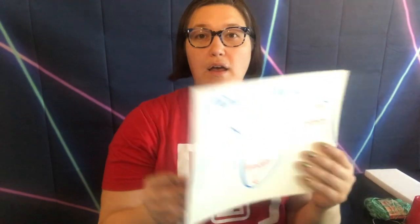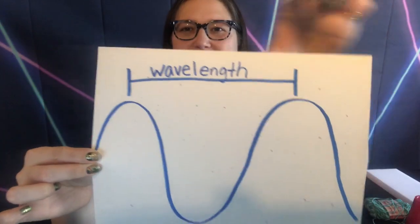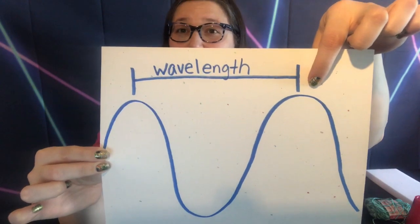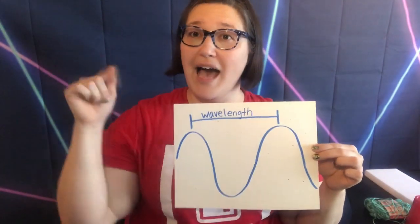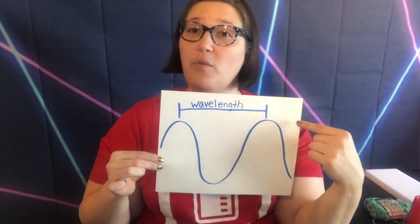We've already learned that sound travels as a wave, and we've learned that waves have crests at the top and troughs at the bottom. The distance between two crests is called a wavelength. Here's one crest, here's the second crest, and the distance between the two is the wavelength. You can change the pitch of a note — how high or low a note is — by simply changing the wavelength.